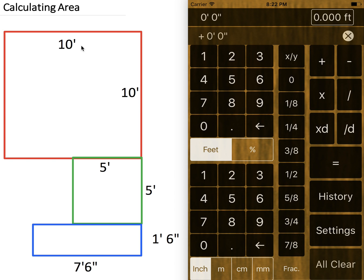So first, we want to put our first dimension in of 10 feet. So 10 feet in the top panel. And since we're multiplying by a dimension, we need to use the xd button for multiplying by a dimension. Then we can enter our second dimension and hit equals.